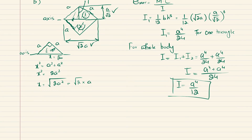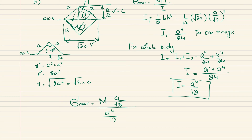Now c equals a/√2, so the maximum stress for orientation B is: sigma_max = M · c / I = M · (a/√2) / (a⁴/12). Simplifying this expression gives sigma_max = 6√2 · M / a³.